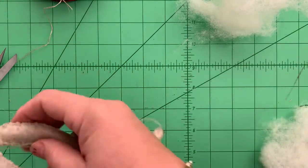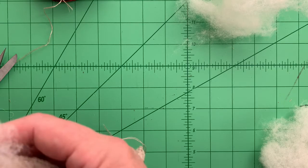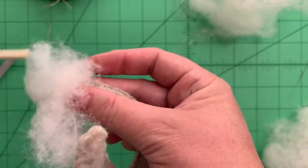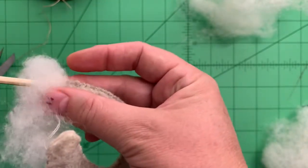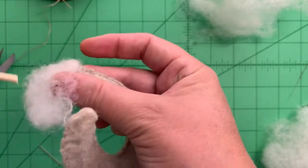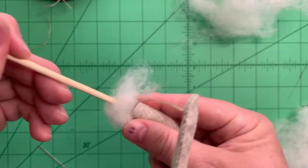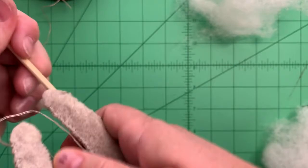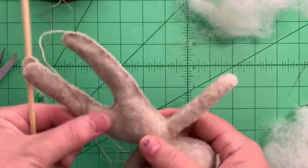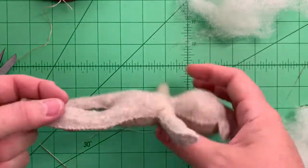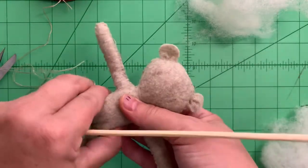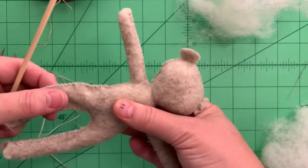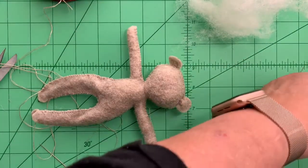There we go, stick that into his little tummy and we'll get some more in there. When we get them to a certain point we'll turn the skewer around and use the pointed end to smooth and shape the roving inside.